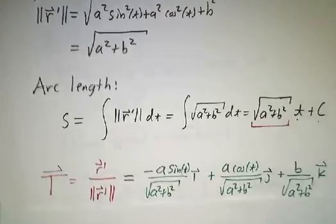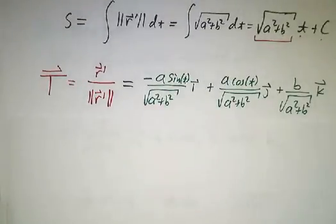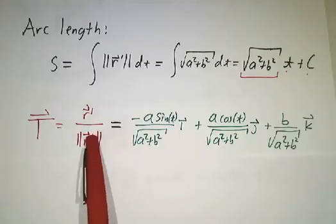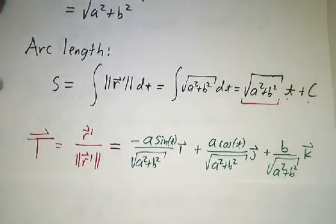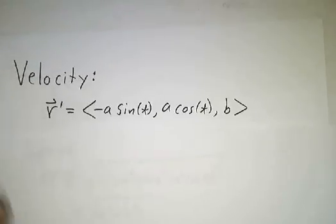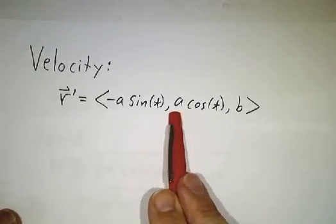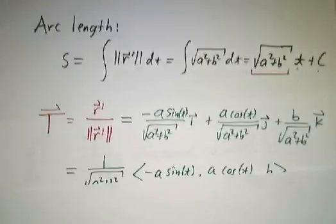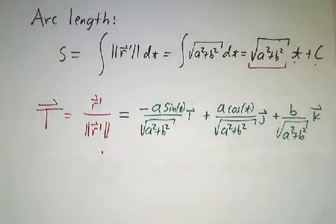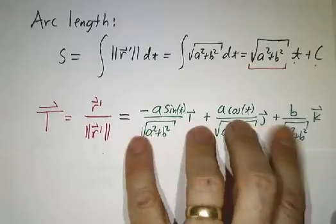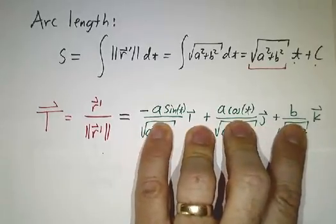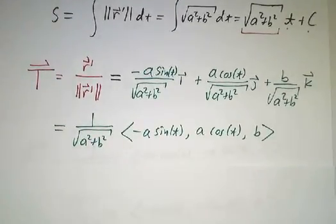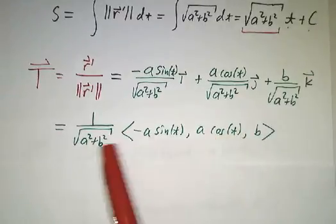The next thing we want to figure out is the tangent vector. To get our tangent vector, we take our velocity and divide by our speed — we want a unit vector pointing in the direction of our velocity. Our velocity is this vector and its length is √(a² + b²), so we just divide through. In ijk notation: this is our velocity vector divided by √(a² + b²). In angle-bracket notation, here's our velocity divided by the speed.